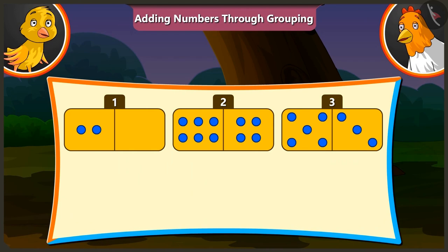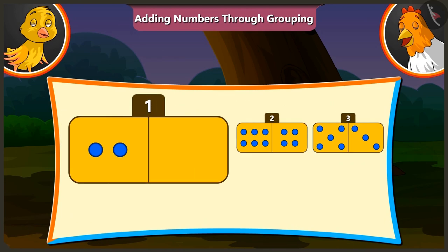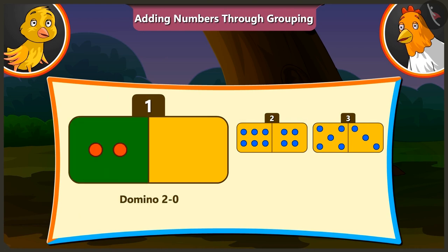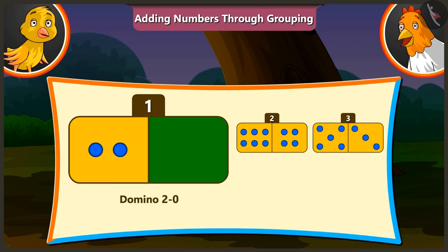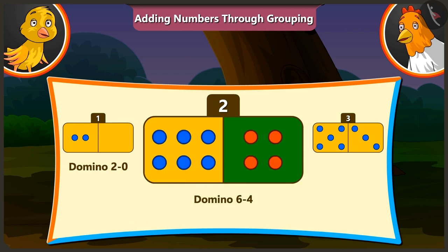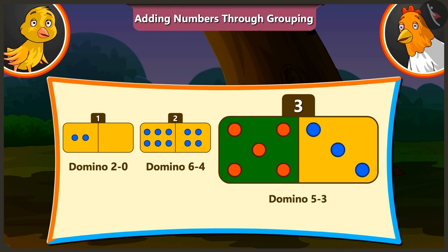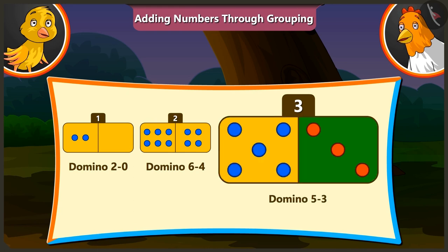Pilu, look! There are three Domino cards kept here. The first card is Domino 2, 0. The second card is Domino 6, 4. And the third card is Domino 5, 3.